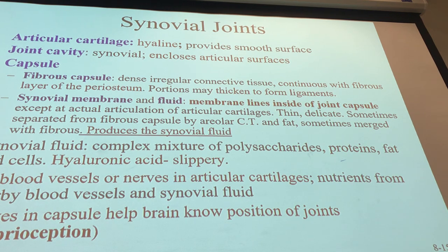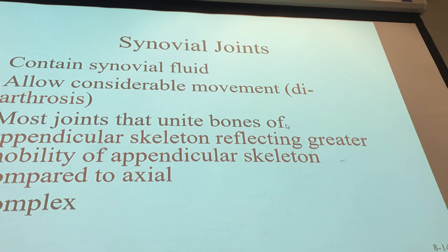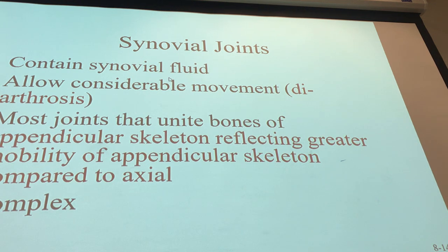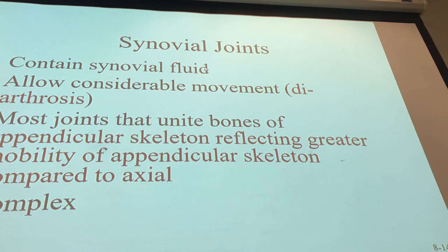Synovial joints are the biggest classification. They contain synovial fluid — think of it like a nice, slightly viscous oil. They're all diarthritic, even though some allow more movement than others. Most joints that unite bones of the appendicular skeleton are synovial joints, reflecting the greater mobility of the appendicular skeleton compared to the axial.